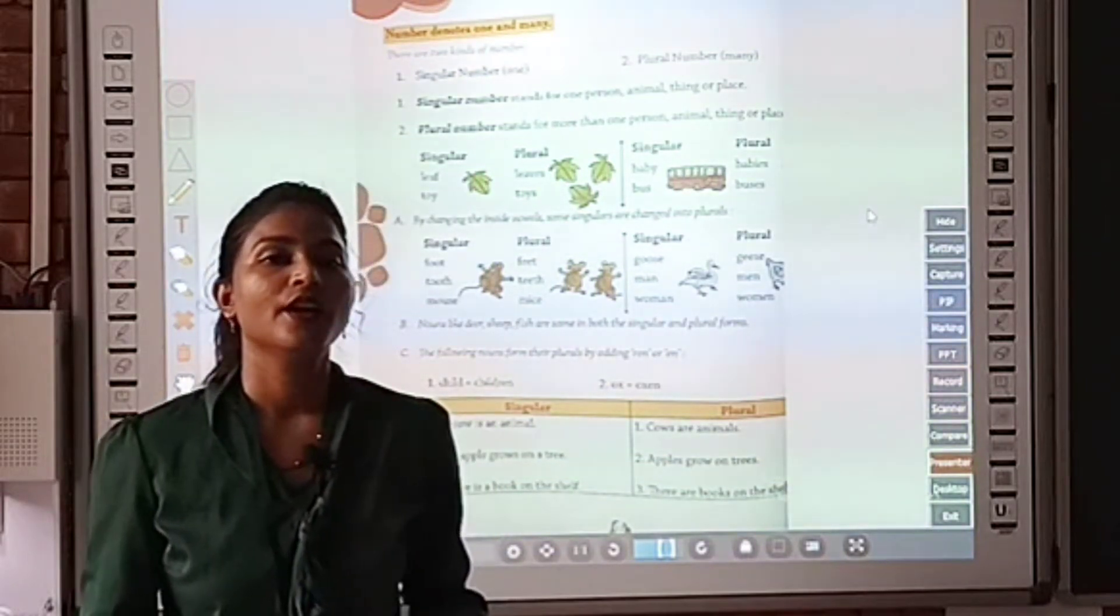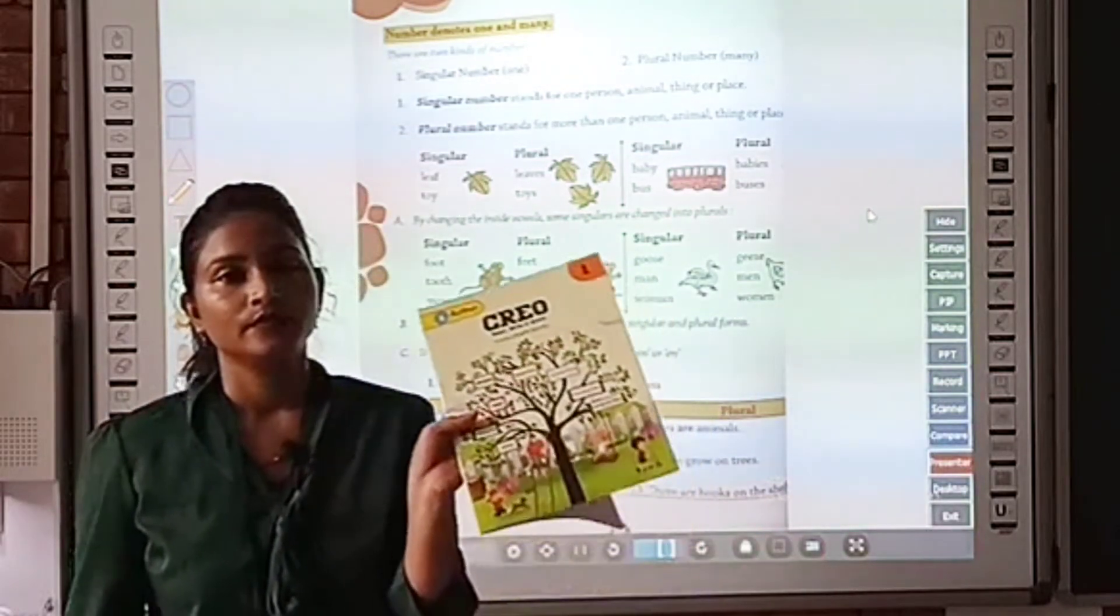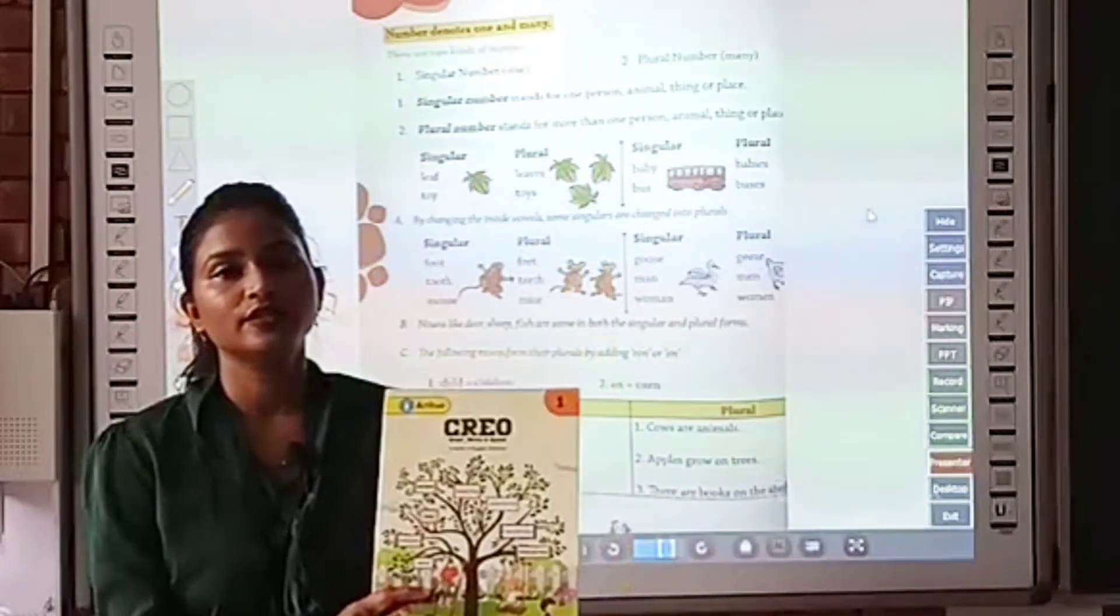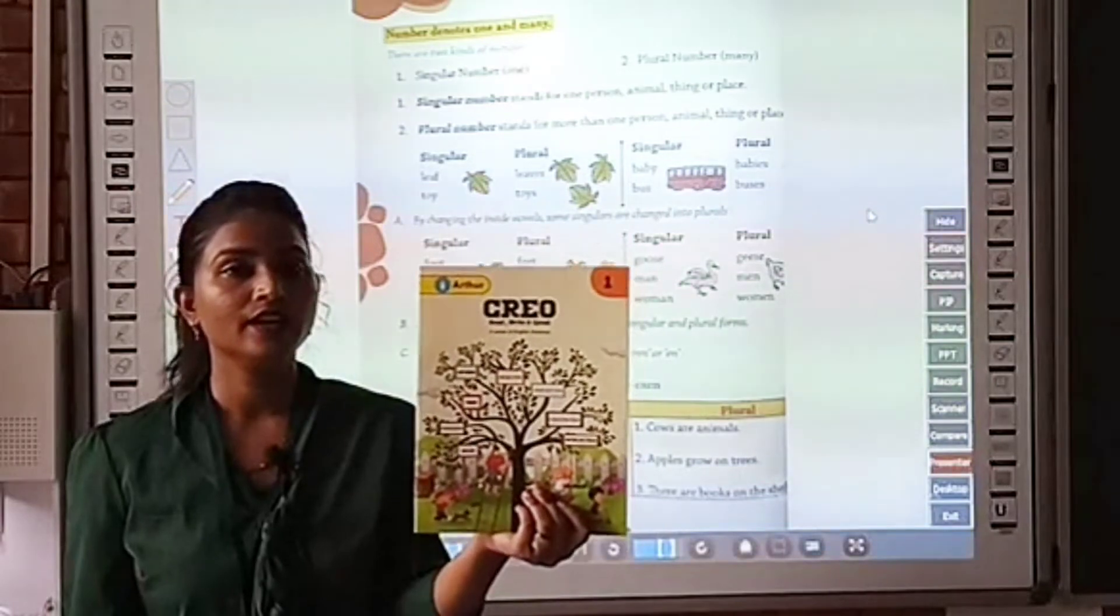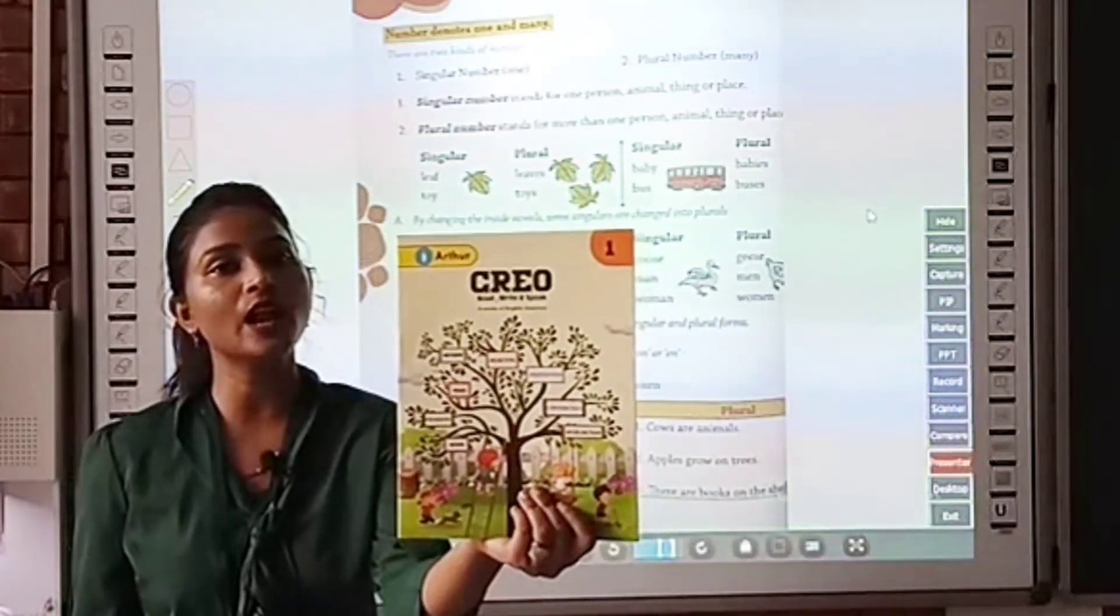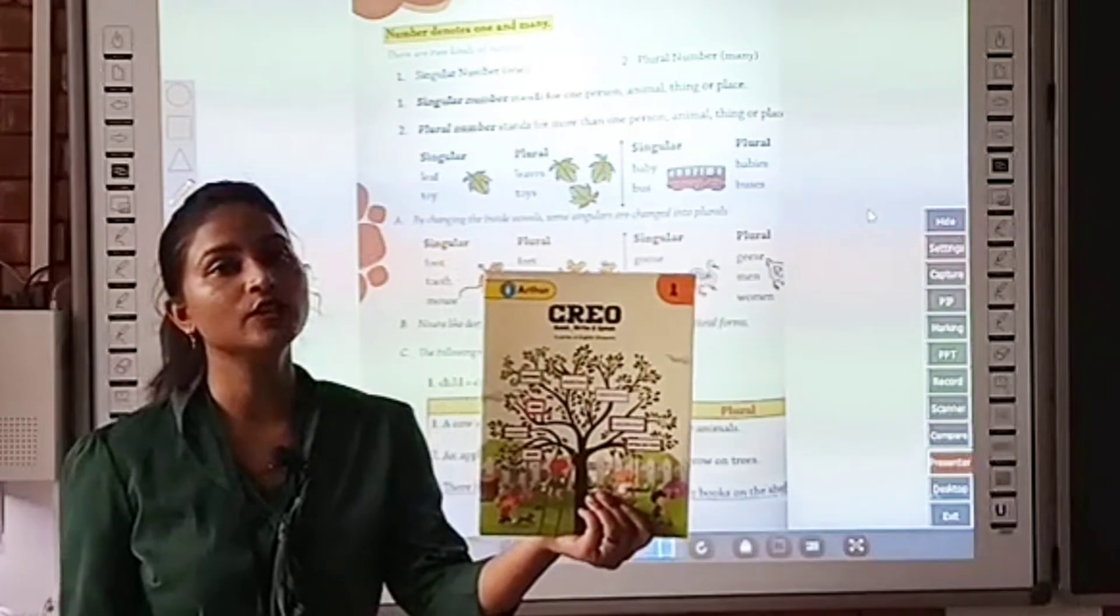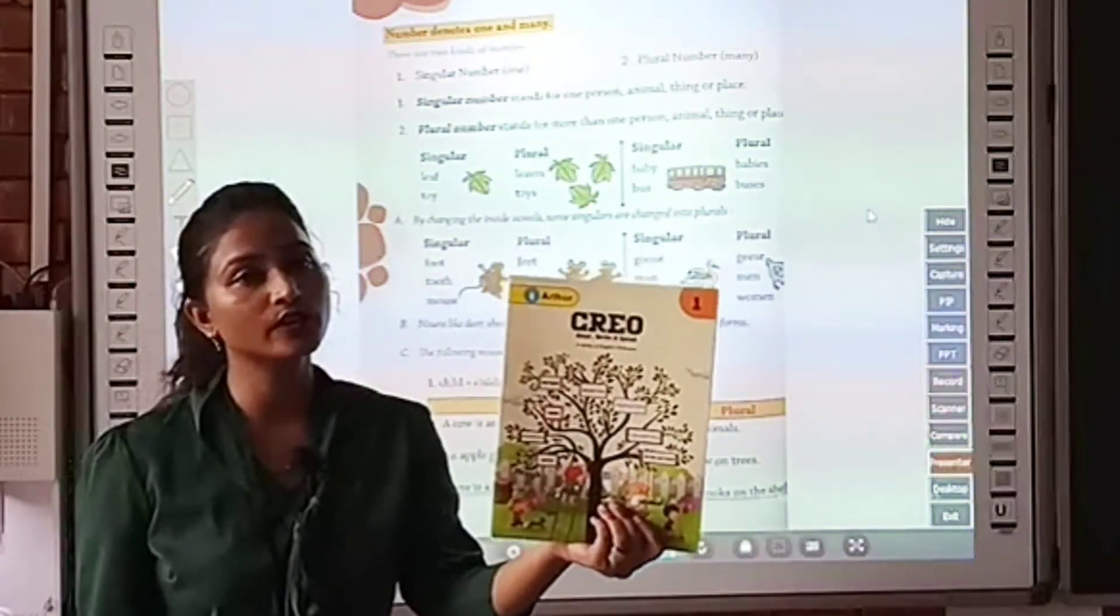For example, if I show you this book. So children, this book is a noun. Name of a thing. It is showing one thing, that is one single book. So it is a singular number or it is a singular noun.